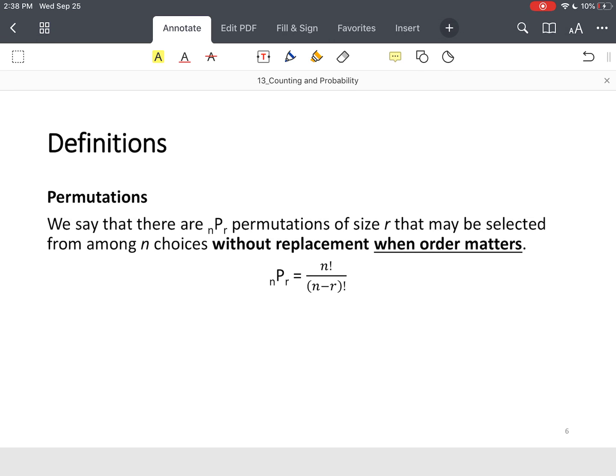So we say there are nPr permutations of size r that may be selected from among n choices without replacement when order matters.